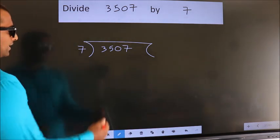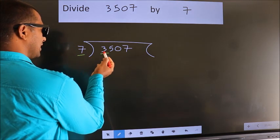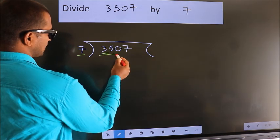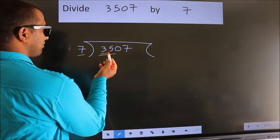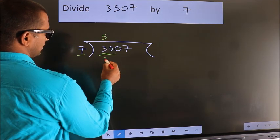Next, here we have 3. Here 7. 3 is smaller than 7, so we should take 2 numbers, 35. When do we get 35 in the 7 table? 7 fives are 35.